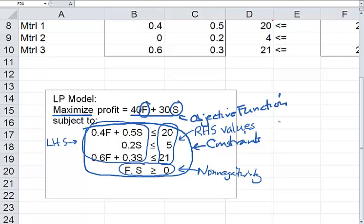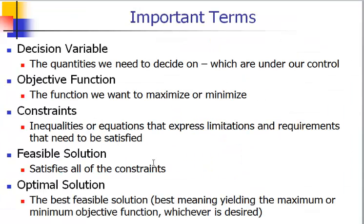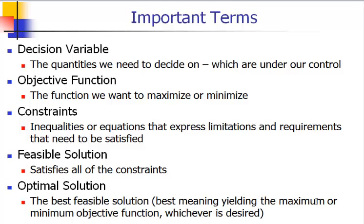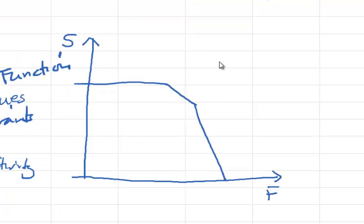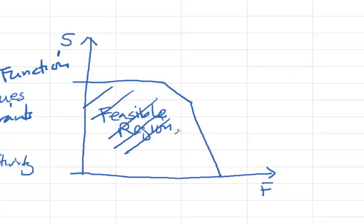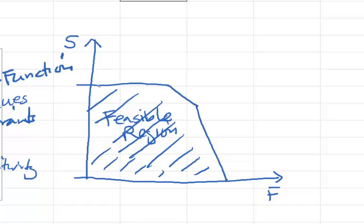The values of F and S that satisfy all of the constraints at the same time are called feasible solutions. There are many possible feasible solutions. What we're looking for is the optimal solution — out of all feasible solutions, the best one, meaning the one yielding the maximum profit or minimum cost, whichever is desired. In your textbook, it talks about how to use the graphical method to solve for the optimal solution.